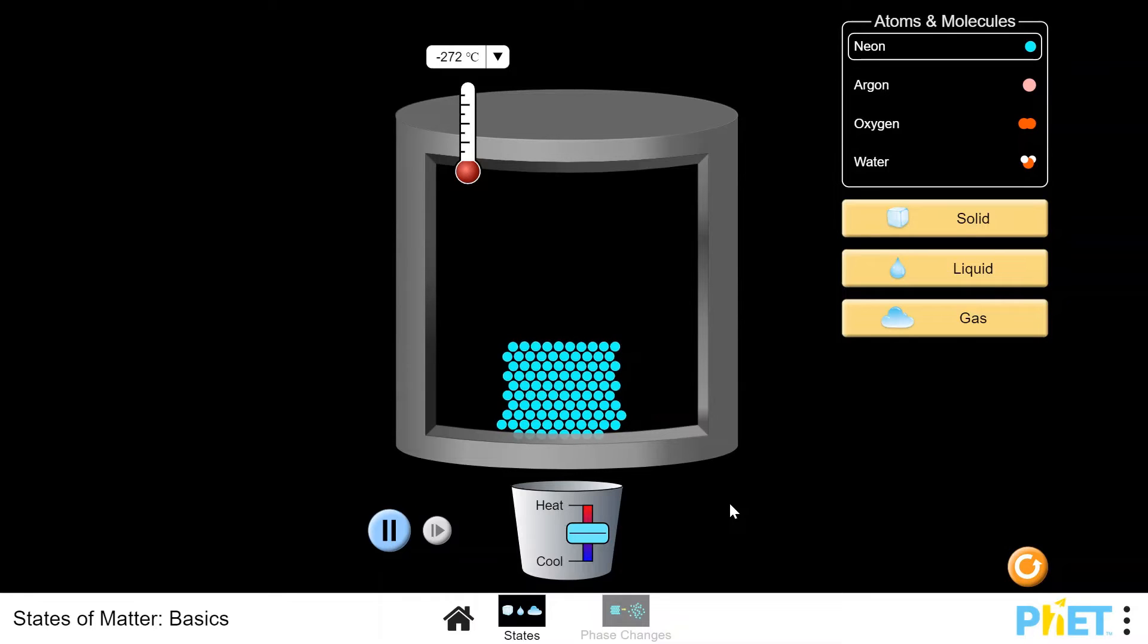In this simulation, you can only reach 1 Kelvin, or negative 272 degrees Celsius. At low temperatures, neon is in the solid state. In solids, the atoms have an ordered arrangement where there is little space between the atoms. As we see, the atoms just vibrate but do not move away from their position.